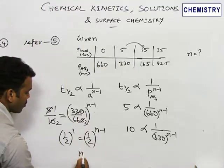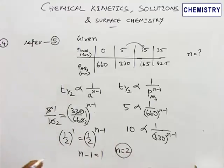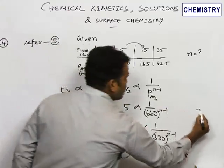That means bases are equal, so power should also be equal. So n minus 1 is equal to 1, or n is equal to 2. This is given in option 3 in your book.